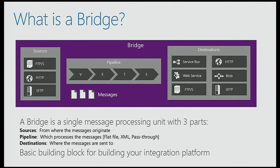What we provide out of the box is an entity called a bridge — a core basic block of your integration application. It has three components: a set of sources, a set of destinations, and a pipeline in between. Sources define where messages come from. Every bridge has an implicit HTTP source endpoint; we also have support for FTP and SFTP. On the destination side we support service bus queues, topics, relays, HTTP, FTP, SFTP, any web service, or another bridge endpoint so you can chain bridges and increase processing capability.